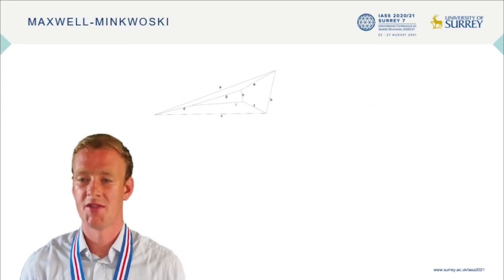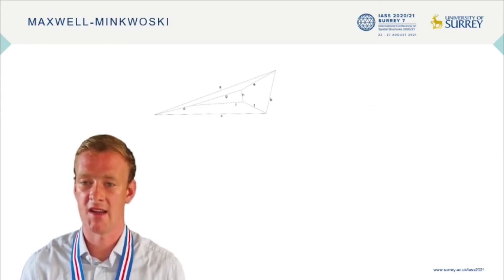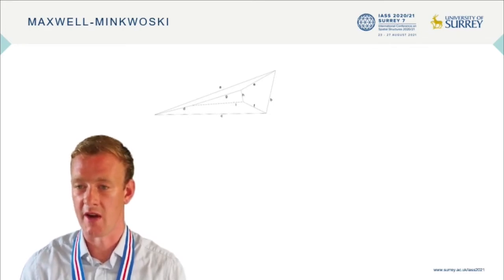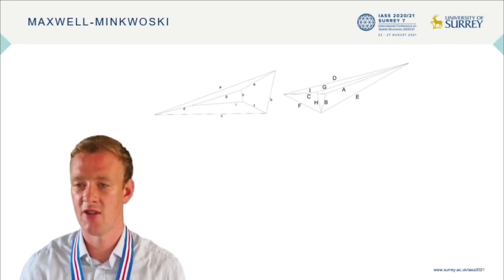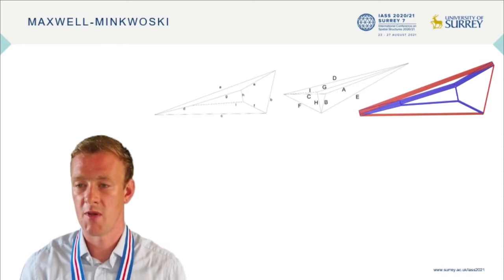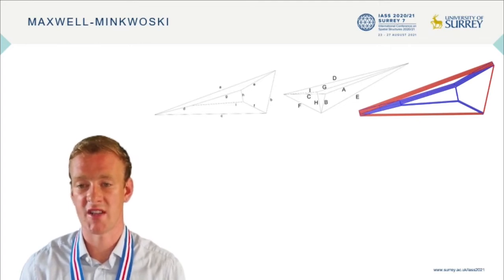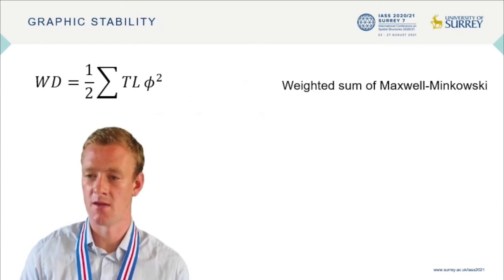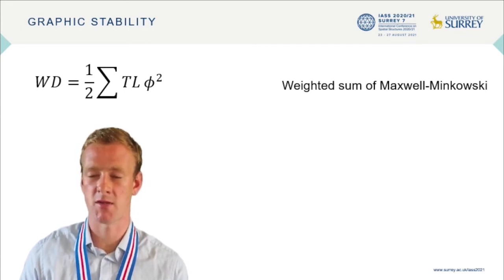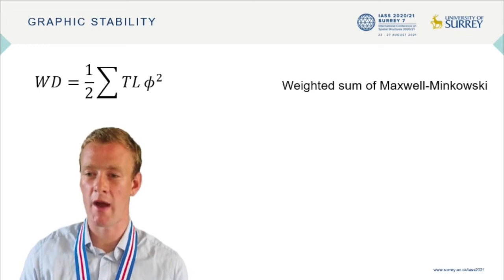Returning to graphic statics, we want to know the TL term in the work equation. This manifests clearly in the Maxwell-Minkowski diagram. Taking the form diagram with bars of length L, it is possible to generate the force diagram with lines of length T. Every line in the form diagram has a corresponding perpendicular line in the force diagram whose length is the force in the bar. Replacing each node in the form diagram by a scaled version of the reciprocal force diagram polygon and joining them produces rectangles of area TL, signed for tension and compression. The work done is therefore just the weighted sum of the Maxwell-Minkowski diagram, where the weight is the square of the rotation of the bar.